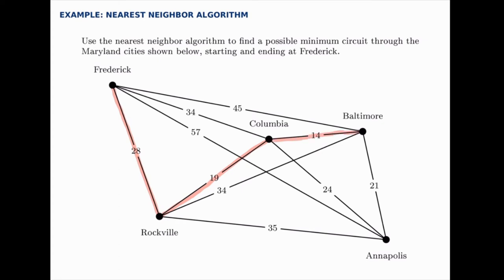From Baltimore we have the options of 45 miles to Frederick, 34 to Rockville, or 21 to Annapolis. So the shortest distance here goes down to Annapolis.